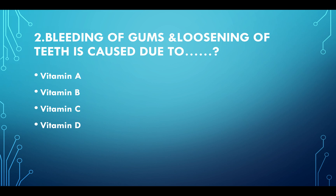Bleeding of gums and loosening of teeth is caused due to: Option A: Vitamin A. Option B: Vitamin B. Option C: Vitamin C. Option D: Vitamin D.